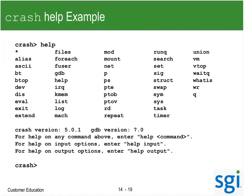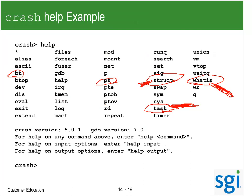There is a help command showing the different options. BT is a key one. The struct command is what we use a lot to look at a structure. The task command prints out the process table or task table. Structure will print out a particular structure, and 'whatis' will tell you what that structure looks like.